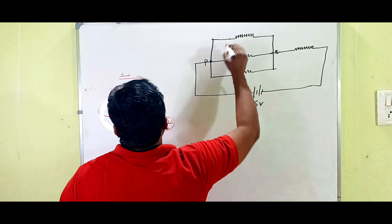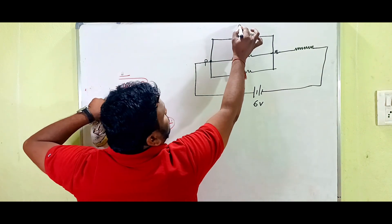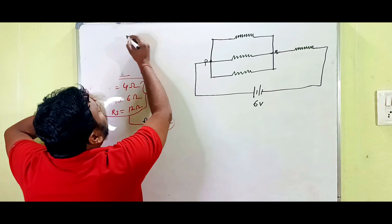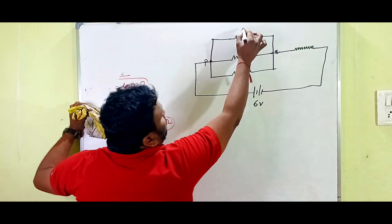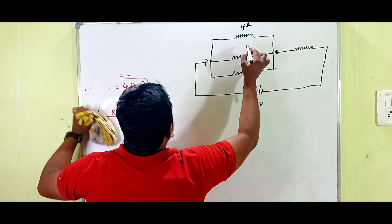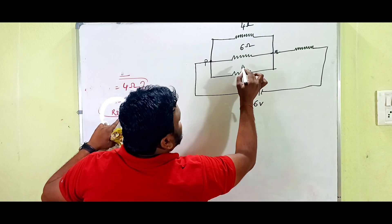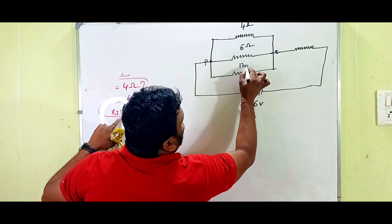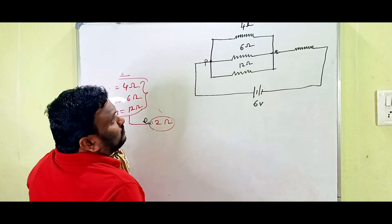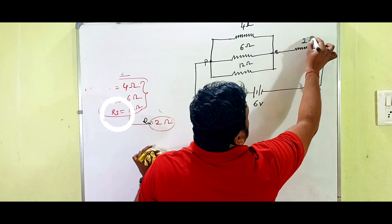The circuit connects back to the 6 volt battery. R1 is 4 ohms, R2 is 6 ohms, R3 is 12 ohms, and the series resistor R4 is 2 ohms.